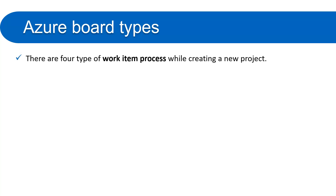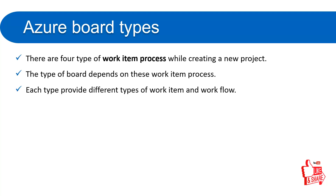There are four types of work item processes when creating a new project. If you watched the previous video, you saw that when creating a new project in the advanced section, there was a dropdown for work item process with four values: Basic, Agile, Scrum, and CMMI. The type of board depends on the work item process selected. Each type provides different work items and workflows. If you choose Basic, Agile, Scrum, or CMMI, you get different work items and different types of workflow.